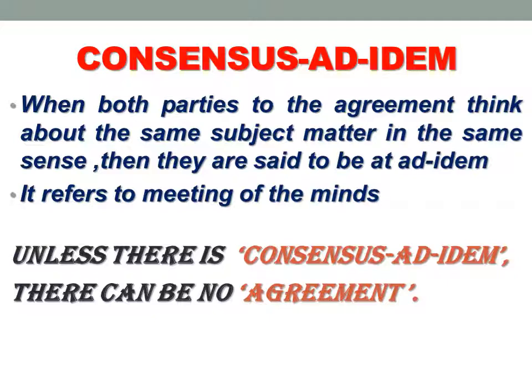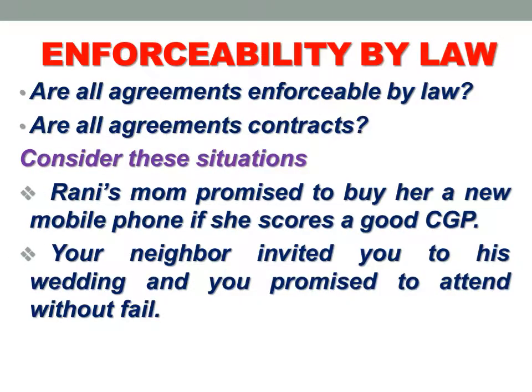Consensus ad idem means when both parties to the agreement think about the same subject in the same manner and in the same sense — that is, meeting of the minds. In our previous example, while A wanted to sell the red car, B was assuming he was buying the green car, which clearly shows a lack of consensus ad idem. Hence, no agreement had arisen. Unless there is consensus ad idem, there can be no agreement, even if there is an offer and acceptance.